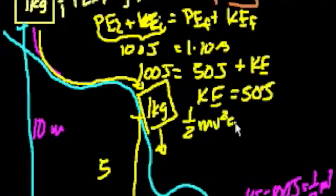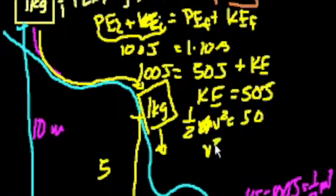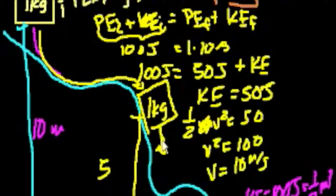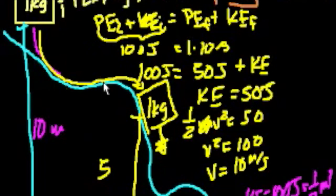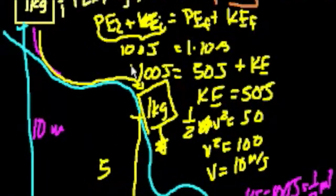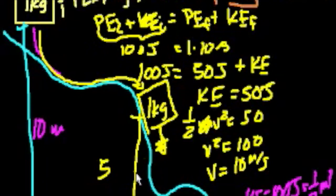½mv² = 50 joules. The mass is 1, so multiplying both sides by 2 gives v² = 100, and the velocity is 10 meters per second along this icy slide. That is something I would have challenged you to solve using traditional kinematics formulas, especially since we don't really know much about the surface of this slide. Even if we did, it would have been a million times harder than just using the law of conservation of energy. I will see you in the next video.